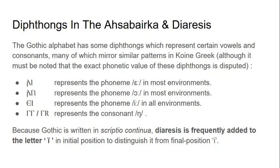Some scholars believe the diphthongs are true diphthongs; others believe they represent single phonemes only in certain environments. The basics are: 'ai' represents a short e as in 'bet' in most environments; 'au' represents an o in most environments; 'ei' represents a long e sound in all environments; and the doubled or conjoined g's represent a nasal consonant as in the Greek word 'angelos,' which is also loaned into Gothic. Because the script is written in scriptura continua, a diaeresis is frequently added to the letter i in initial position to mark word boundaries.